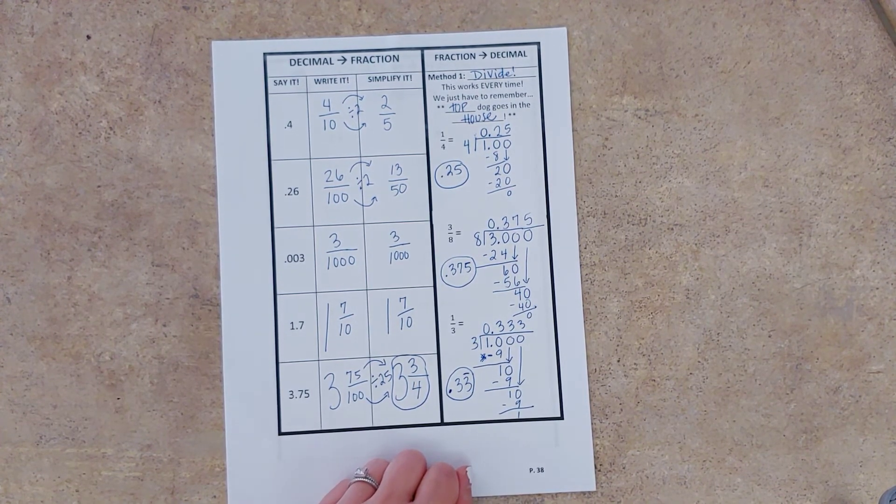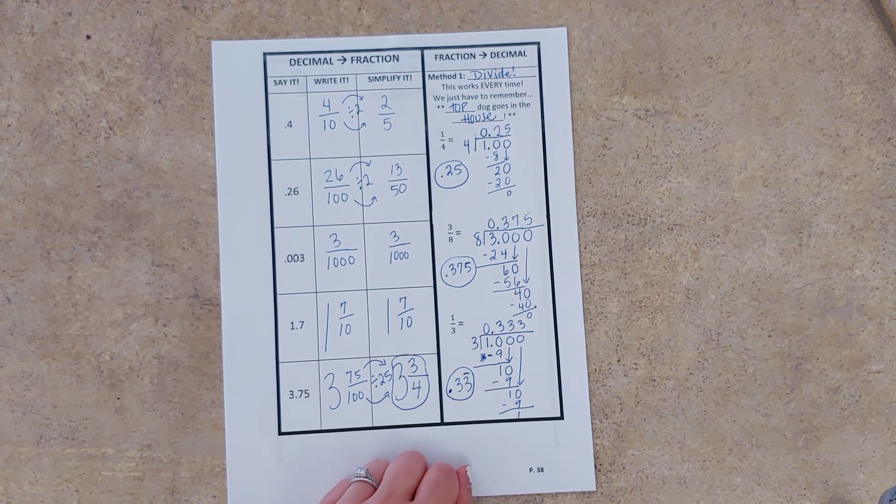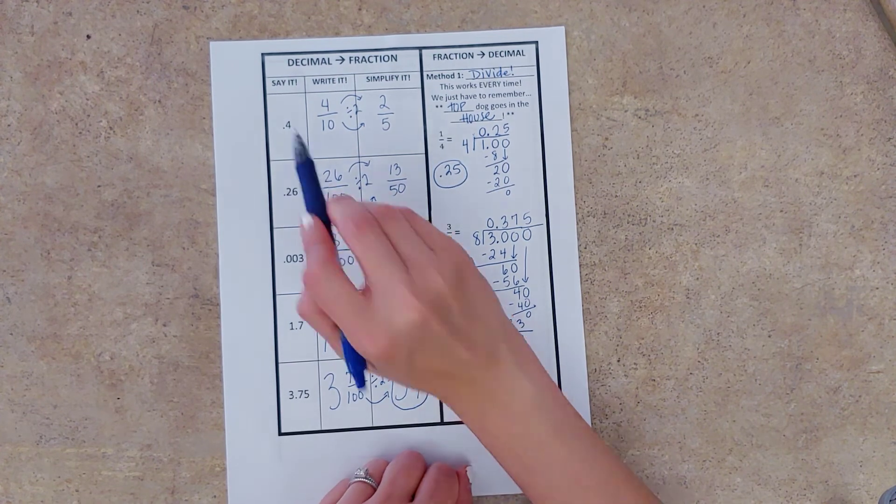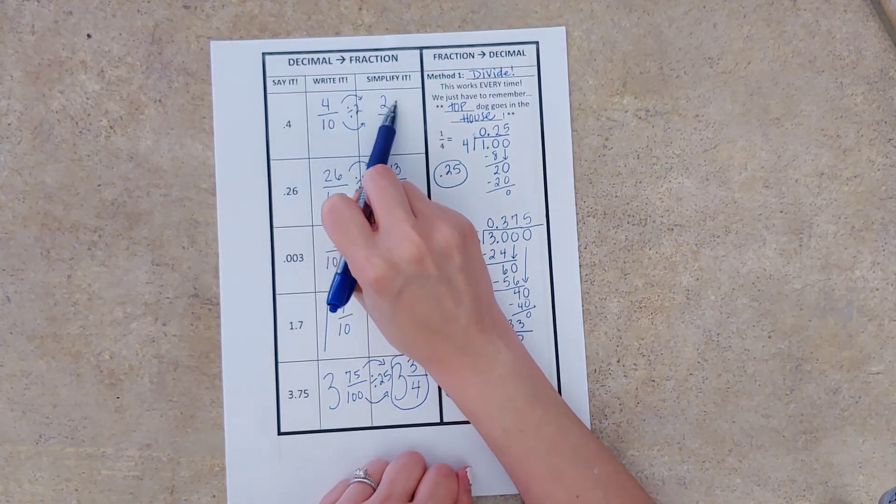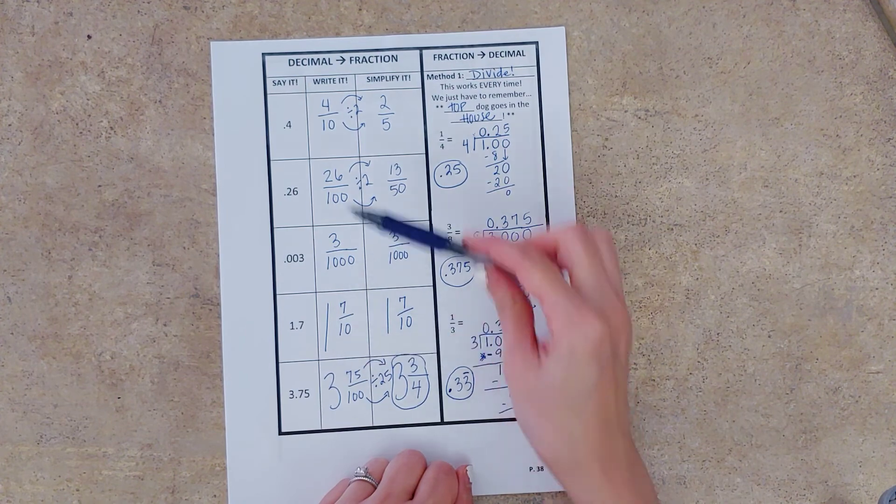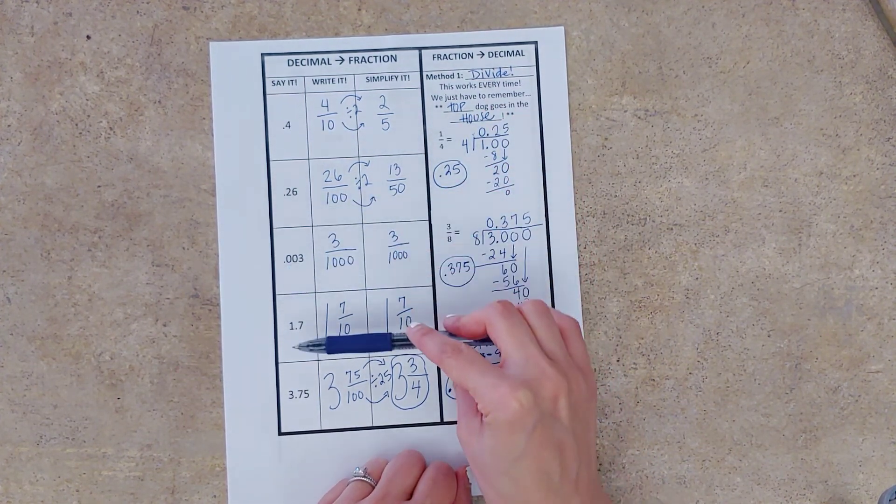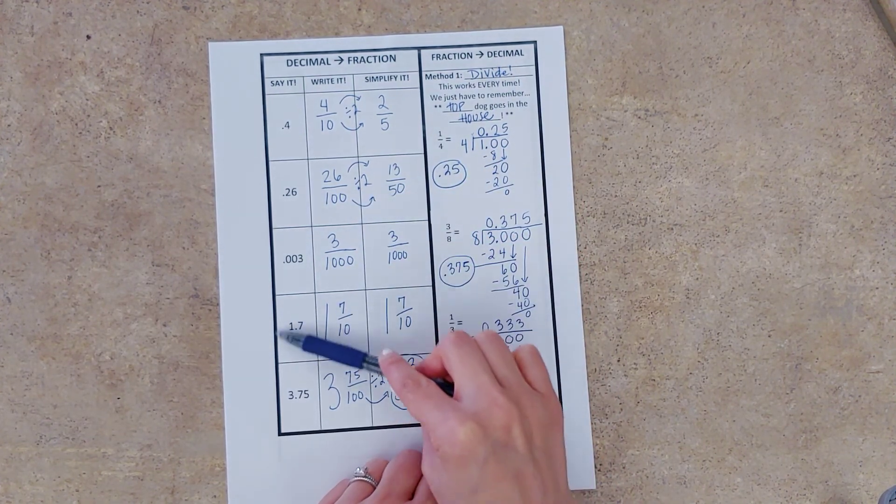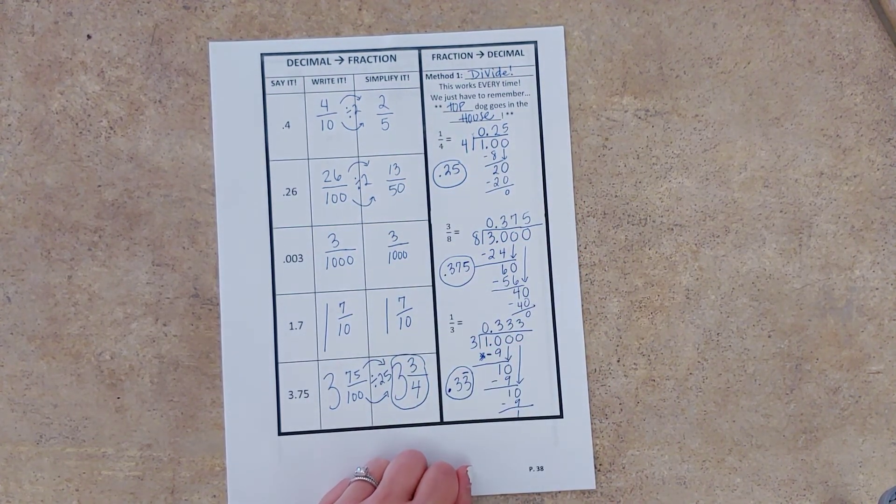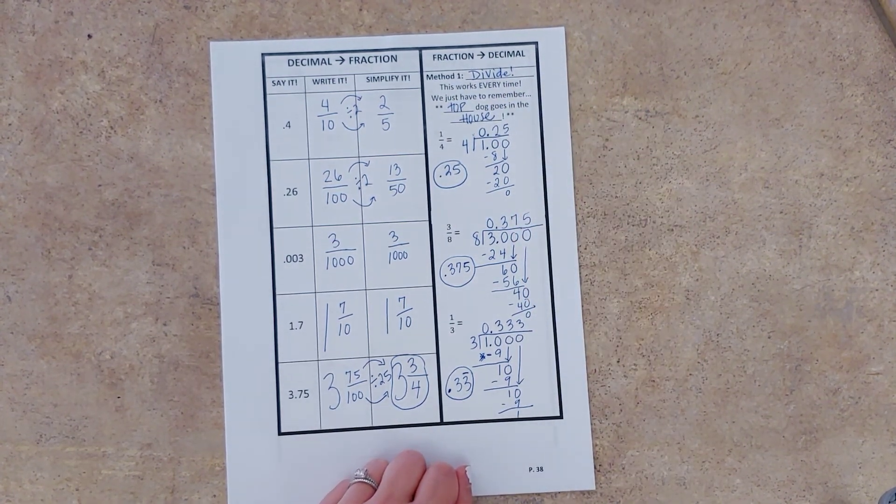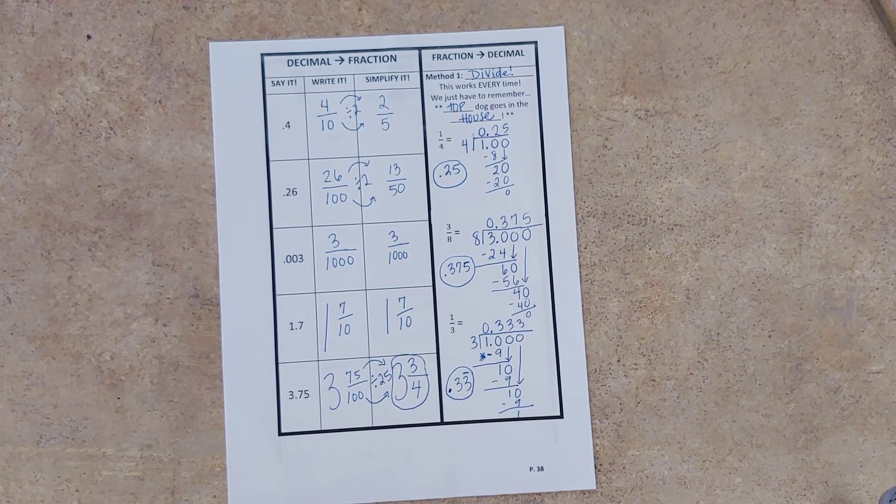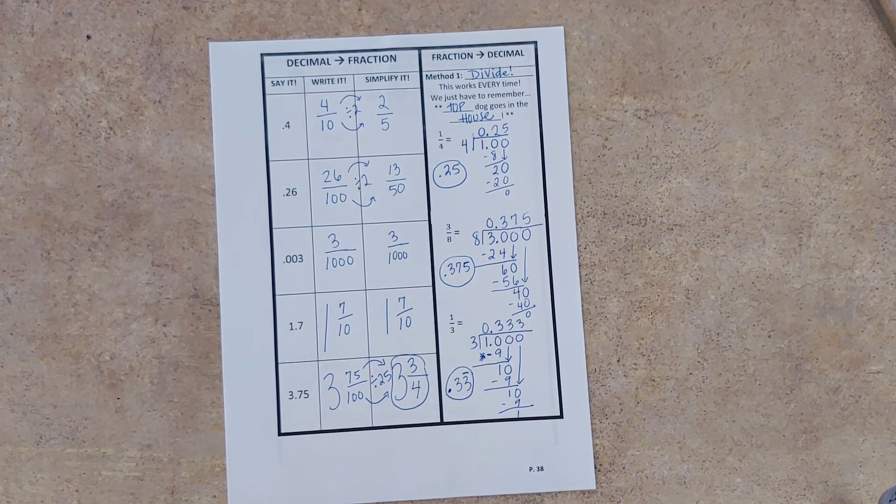All right, that is how we go from decimals to fractions and fractions to decimals. So decimal to fraction. Say it, write it, simplify it. For this part, super important that we are able to read decimals with proper place value, tenths, hundredths, thousandths, knowing how to read a decimal when we have a whole number. And then a fraction to a decimal using something we already know, that the fraction bar means to divide. That's it. All right, so fraction to decimal. We use division. Our top dog goes in the house. And then we are set to go.